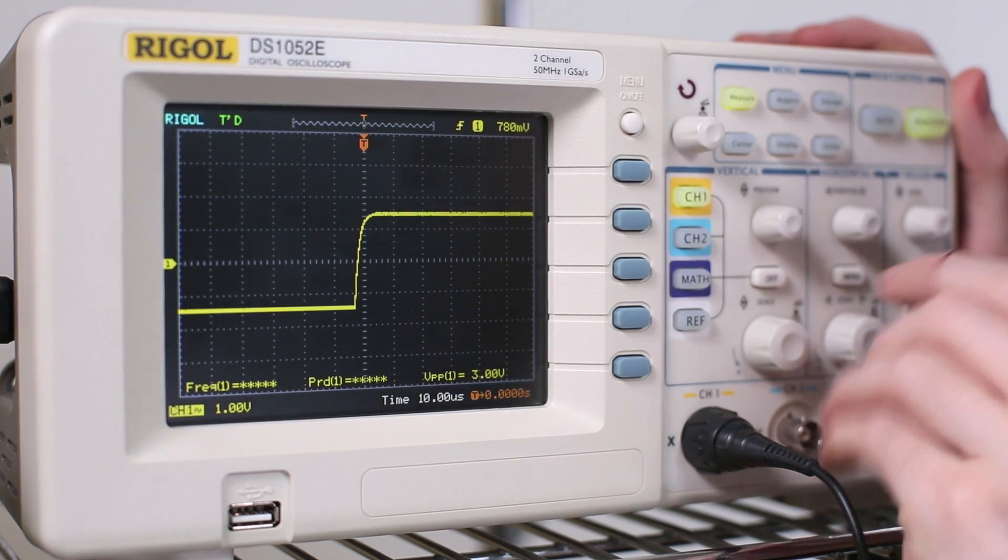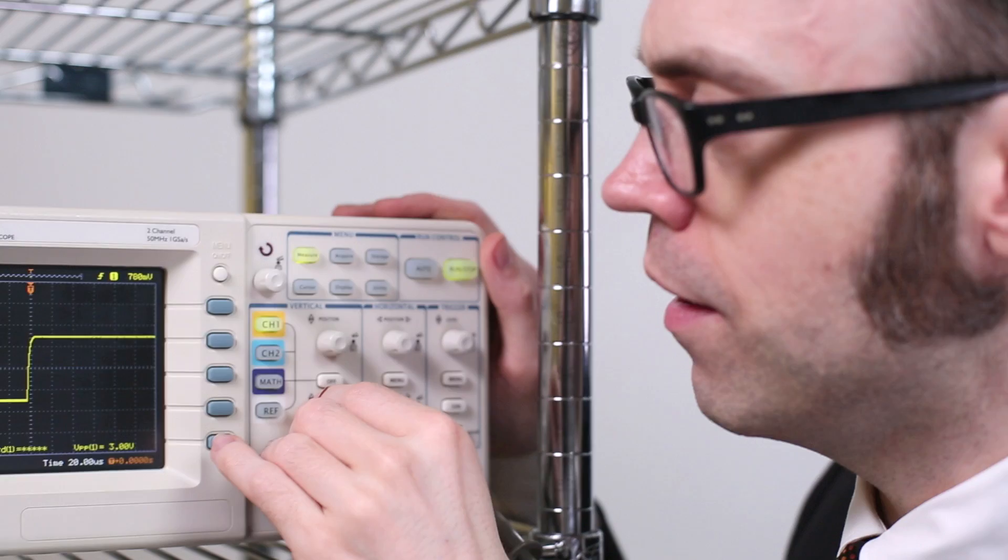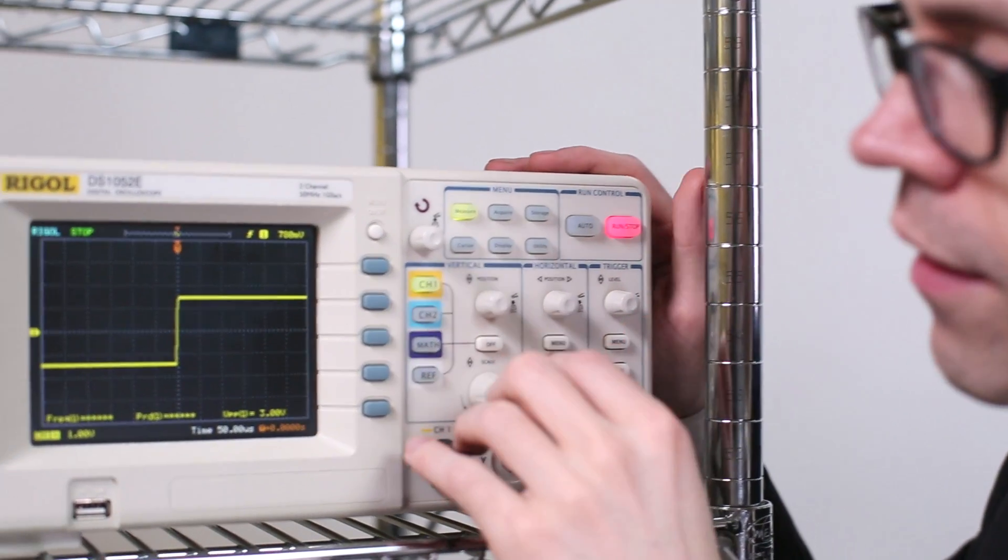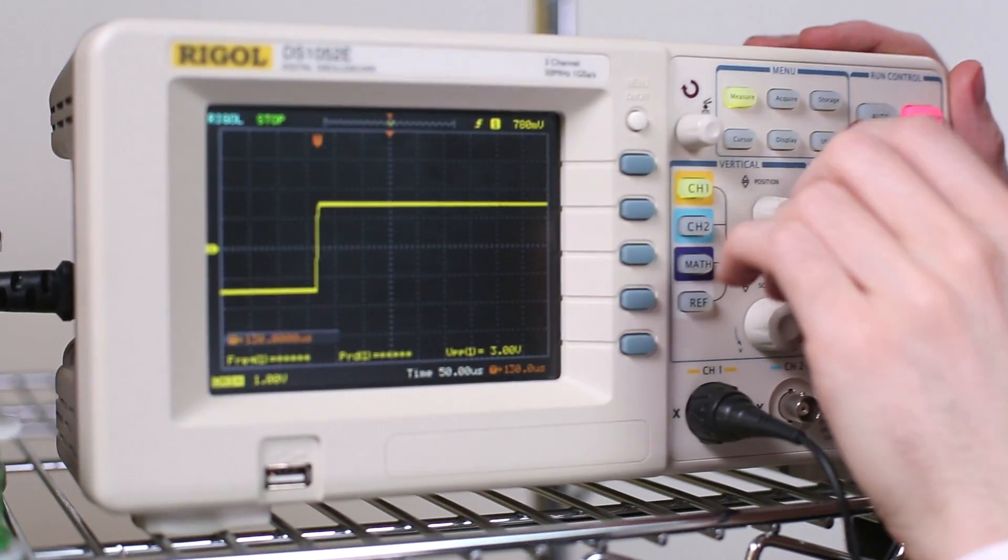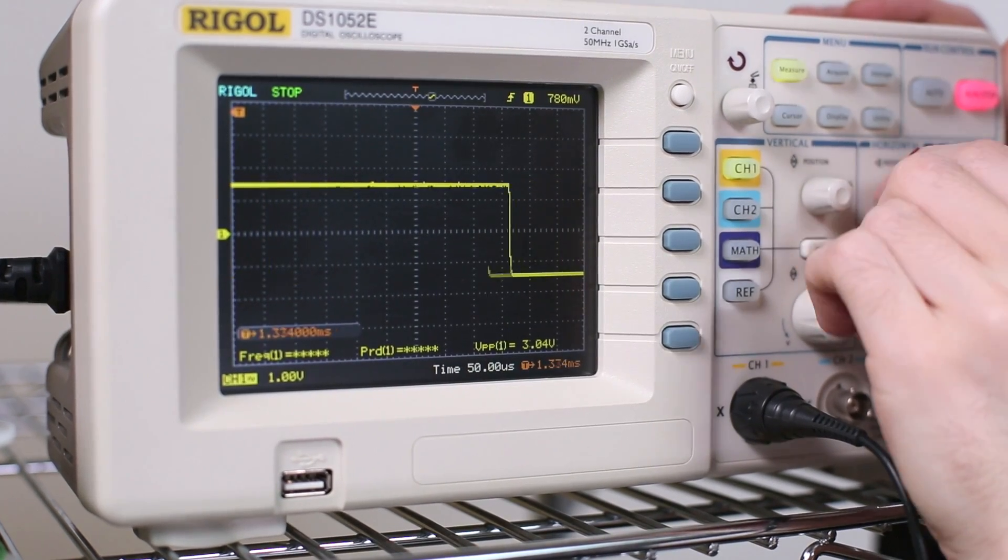The horizontal and vertical scale controls allow us to zoom in on a particular part of the waveform and examine it more closely. And at any time, I can freeze the signal and scroll through horizontally to look for any changes that occur over a longer period.